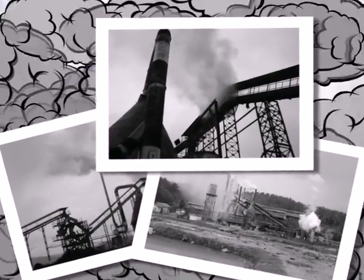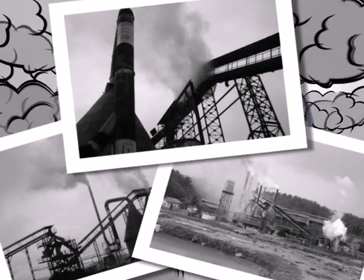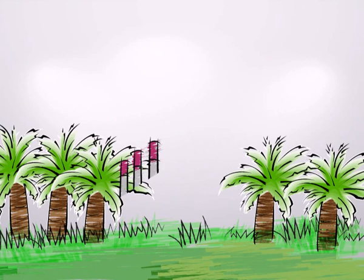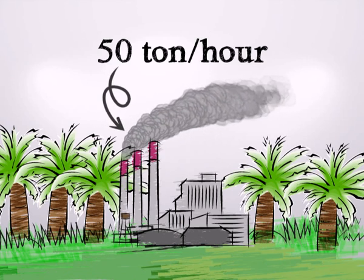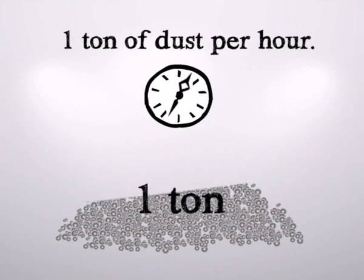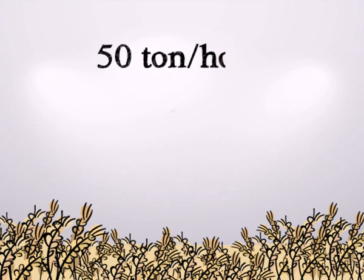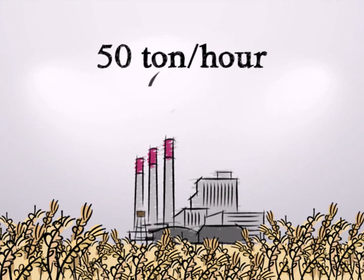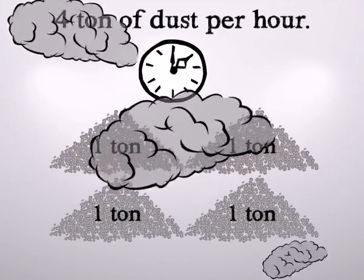Reducing the dust, however, needs an efficient dust collector. A typical 50 ton per hour palm oil fiber shell fired boiler will generate one ton of dust per hour. A 50 ton per hour rice husk fired boiler will generate four tons of dust every hour.